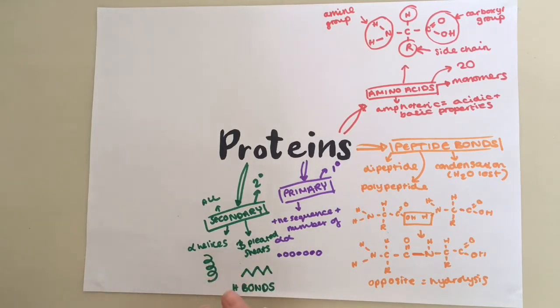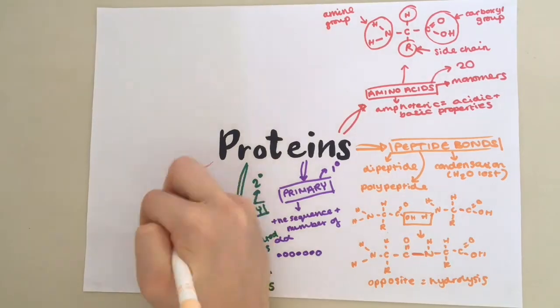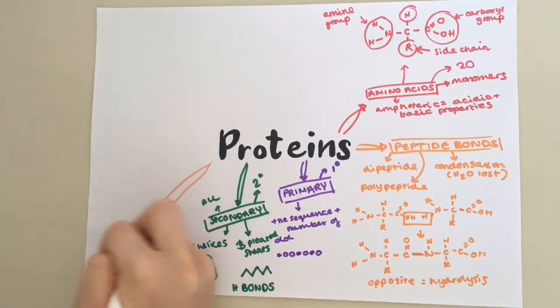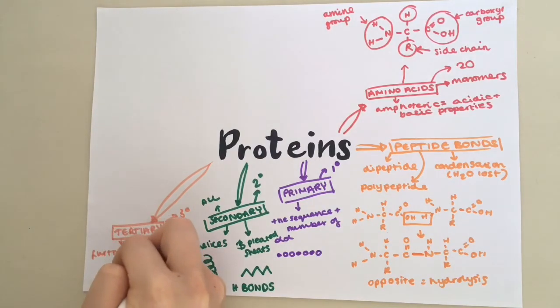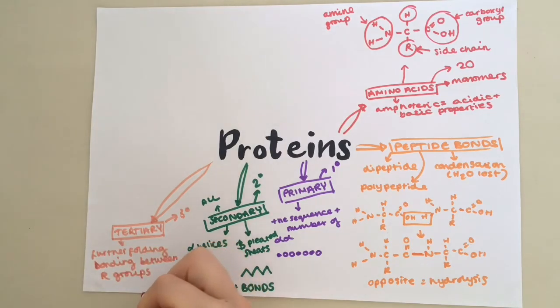And it results in the R groups sticking out to the side ready to bond, forming the tertiary structure. Tertiary structure is further folding of the poly-peptide chain caused by bonding between the R groups. And this forms specific 3D shapes.